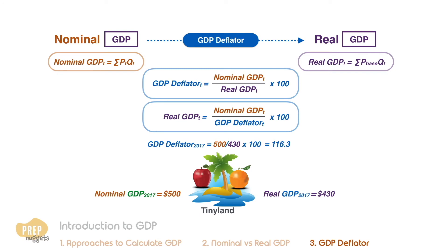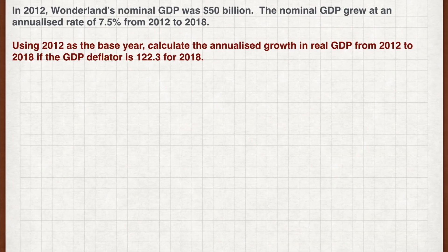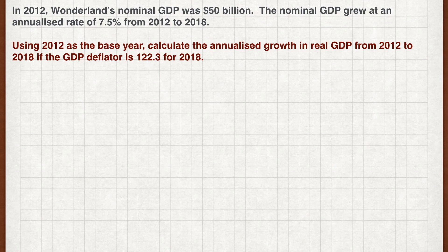Let's illustrate this with an exercise. In 2012, Wonderland's nominal GDP was $50 billion. The nominal GDP grew at an annualized rate of 7.5% from 2012 to 2018. Using 2012 as the base year, calculate the annualized growth in real GDP from 2012 to 2018 if the GDP deflator is 122.3% for 2018.